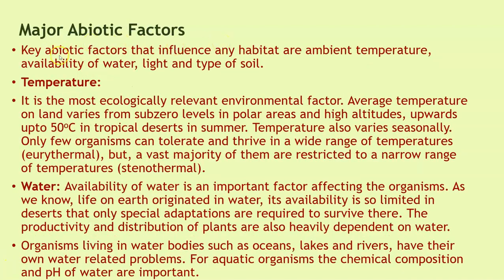Now let us look at the major abiotic factors. Key abiotic factors that influence any habitat are ambient temperature, availability of water, light, and type of soil. Temperature is the most ecologically relevant environmental factor. Average temperature on land varies from sub-zero levels in polar areas and high altitudes up to 50 degrees Celsius in tropical deserts in summer. Temperature also varies seasonally. Only a few organisms can tolerate a wide range of temperatures — they are called eurythermal — but the vast majority are restricted to a narrow range and are called stenothermal.